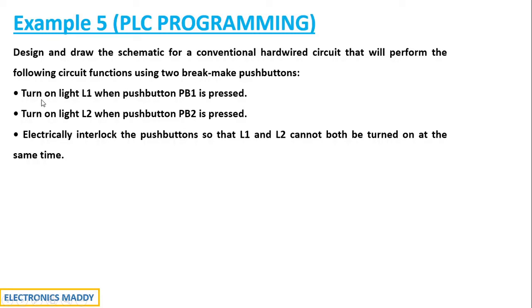They've given us the conditions: turn on light L1 when push button PB1 is pressed, turn on light L2 when push button PB2 is pressed, electrically interlock the push button so that L1 and L2 cannot both be turned on at the same time. So when PB1 is pressed L1 should turn on, when PB2 is pressed L2 should turn on.